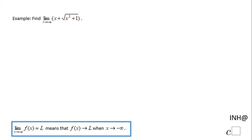Welcome back. In this example, we have to find the limit as x approaches negative infinity of x plus the square root of x squared plus 1. If you notice, if we plug in negative infinity, we get negative infinity plus infinity, which is an undefined form. So in order to solve this limit, we have to use an algebraic process.